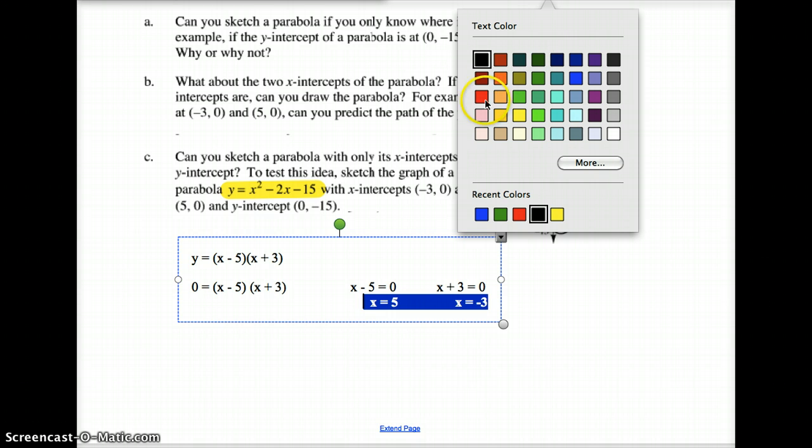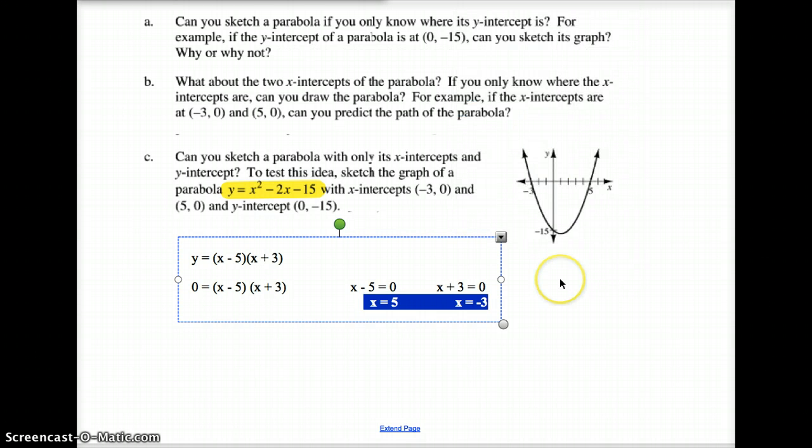I'm going to bold those so you can kind of see them, in a nice fun red color. So that is what we get for that one. And you'll notice on this graph right here, where does it cross the x-axis? It crosses at positive 5, which we got from right here. And it crosses at negative 3, which we got from right here.